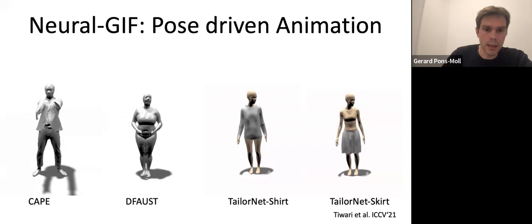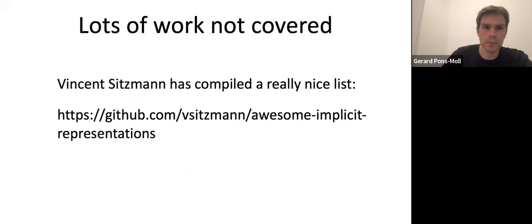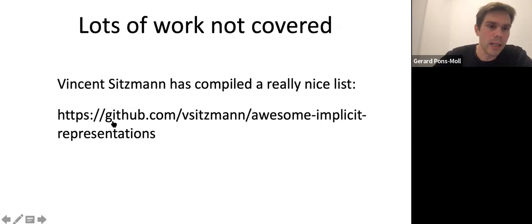In the interest of time, I want to mention there's a lot of work I didn't cover in neural implicit representations — the field is evolving very fast. There's a GitHub repository by your colleague Vincent keeping track of the works, which was quite well updated last year. There's also a review paper coming up — some ways of keeping up with the work that is happening.